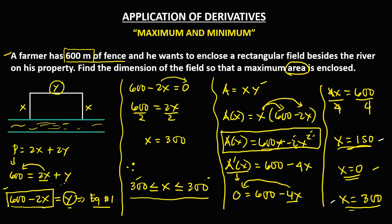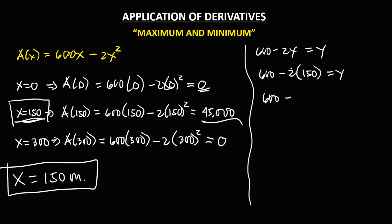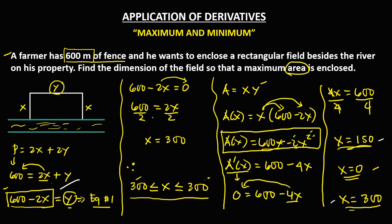Now we solve for y using equation one: y equals 600 minus 2x. Substituting x equals 150: y equals 600 minus 2 times 150, which is 600 minus 300, so y equals 300 meters.